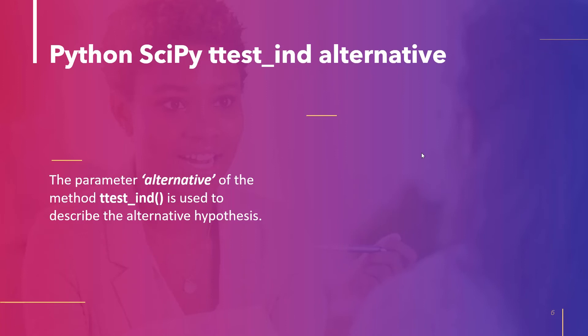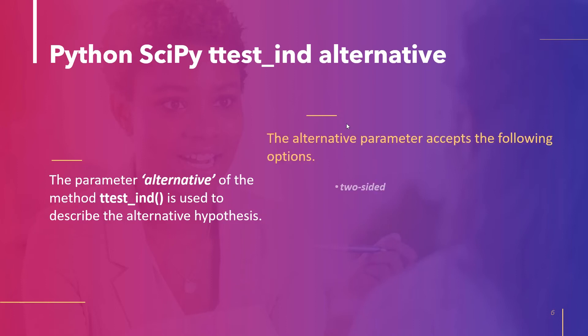The next topic is the alternative parameter in Python scipy ttest_ind. The alternative hypothesis is specified by the parameter named alternative. The accepted choices are: two-sided, meaning the distribution means from which the samples are drawn are not equal; less, meaning the first sample's underlying distribution mean is lower than the second sample's; and greater, meaning the first sample's distribution mean is higher than the second sample's distribution mean.